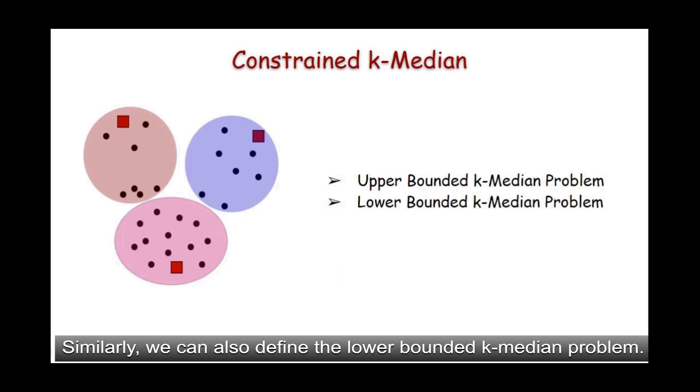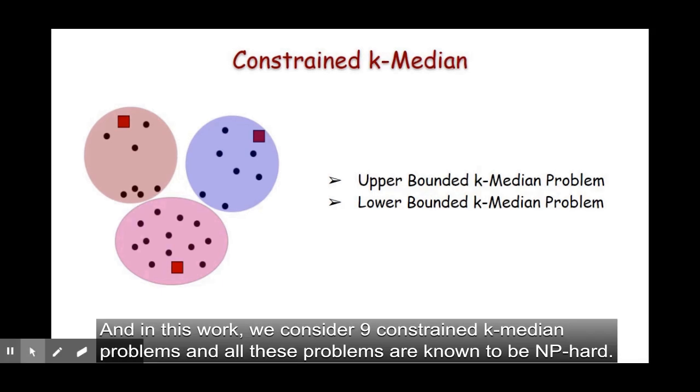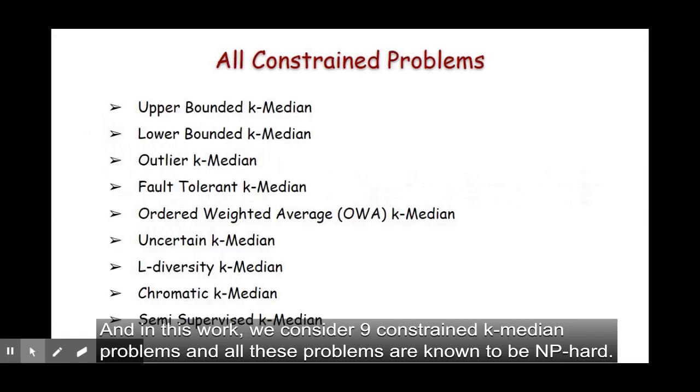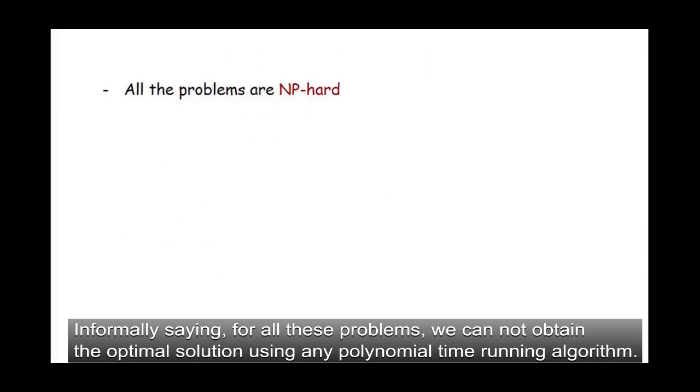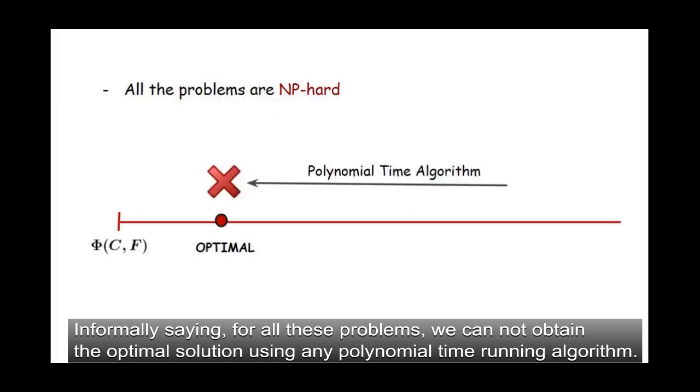Similarly, we can also define the lower bounded k-median problem. And in this work, we consider nine constrained k-median problems. And all these problems are known to be NP-hard. Informally saying, for all these problems, we cannot obtain the optimal solution using any polynomial time running algorithm.